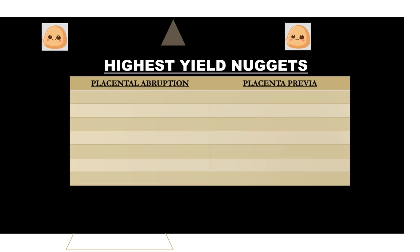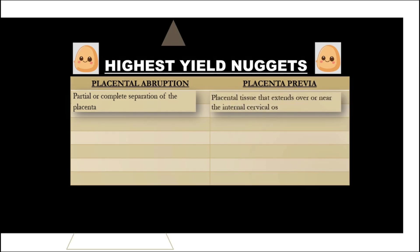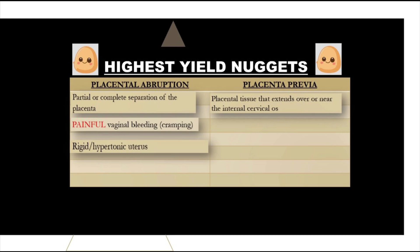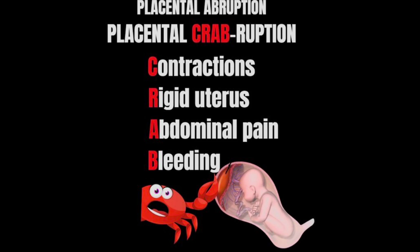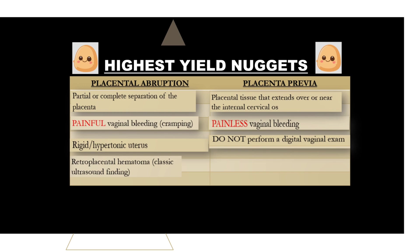Final recap comparing both conditions: Placental abruption is premature separation of the placenta from the uterus; placenta previa is abnormal placental tissue over or near the internal cervical os. Abruption has an A — placenta moving away. Previa has a P — placenta plugging up. Placental abruption presents with painful bleeding, cramping, and a rigid hypertonic uterus — remember CRAB. Placenta previa presents with painless bleeding — remember placenta stevia. Do not perform a digital vaginal exam with placenta previa, as it can cause severe hemorrhage. With placental abruption, retroplacental hematoma is the classic ultrasound finding.